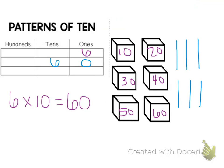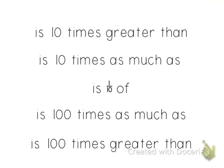I can write some different sentences to explain the relationship between 6 and 60. I can say that 60 is 10 times greater than 6, because 6 times 10 is 60. I can also say 60 is 10 times as much as 6.